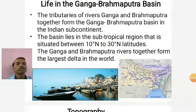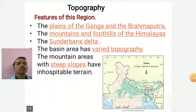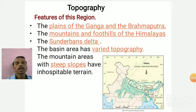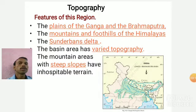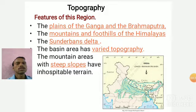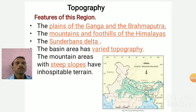The Ganga-Brahmaputra rivers together form the largest delta in the world. The Amazon river basin is the world's largest river basin, but the Ganga-Brahmaputra delta is the largest delta in the world. The topographical features of the Ganga-Brahmaputra and the Sundarbans delta span areas including Uttarakhand, Assam, Sikkim, and the Sundarbans delta in West Bengal. The basin areas have varied topography, with mountain areas having steep slopes and inhospitable terrain.